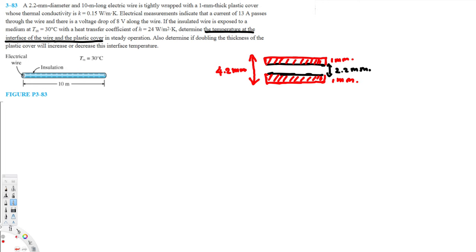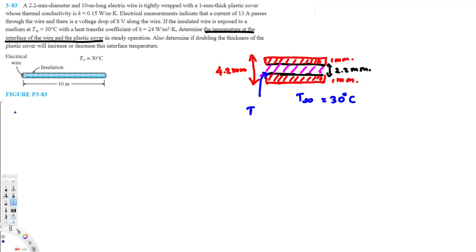The interface temperature we're looking for is at the boundary between the wire and the plastic cover — that inner surface. The surrounding temperature outside is 30°C. To find the interface temperature, we use the equation Q̇ = (T_interface − T_infinity) / R_total, where T_infinity = 30°C is known and we need to find Q̇ and R_total.